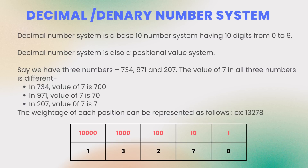The value for each position can be represented as shown in this table. In digital systems, instructions are given through electric signals. Variations are done by changing the voltage of the signal, so having 10 different voltages to implement the decimal number system in digital equipment is very difficult. Therefore, number systems that are easier to implement digitally have been developed.